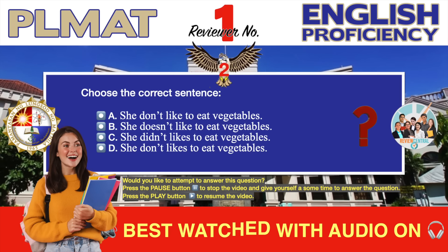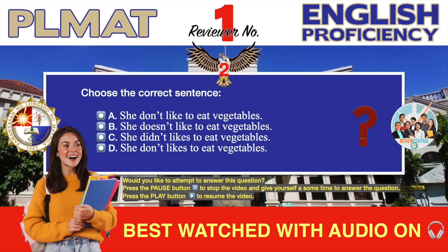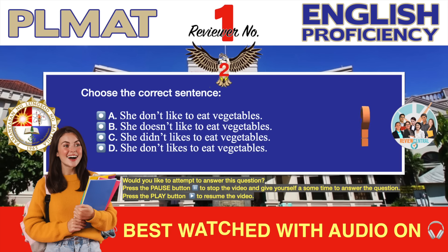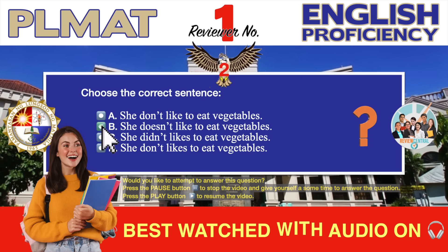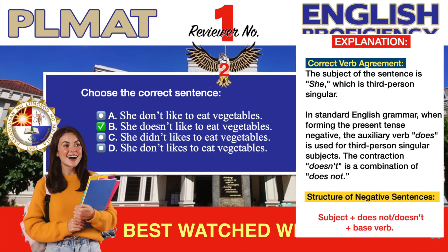Question number two. Choose the correct sentence. A. She don't like to eat vegetables. B. She doesn't like to eat vegetables. C. She didn't likes to eat vegetables. D. She don't likes to eat vegetables. The correct answer is B: She doesn't like to eat vegetables. Correct verb agreement.